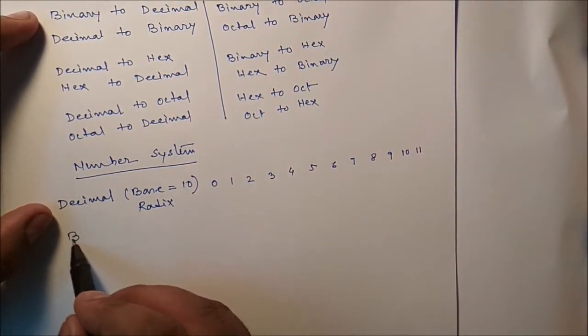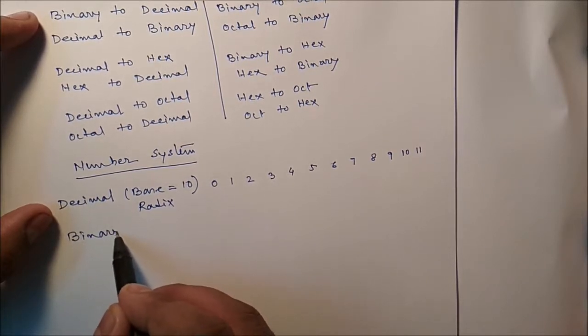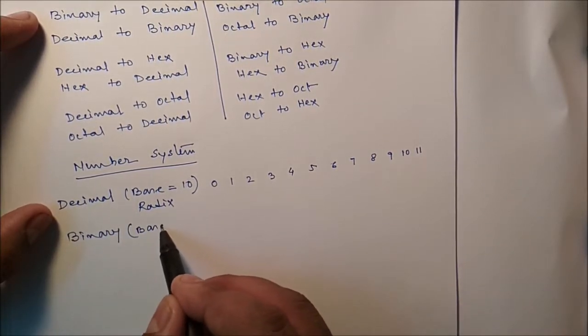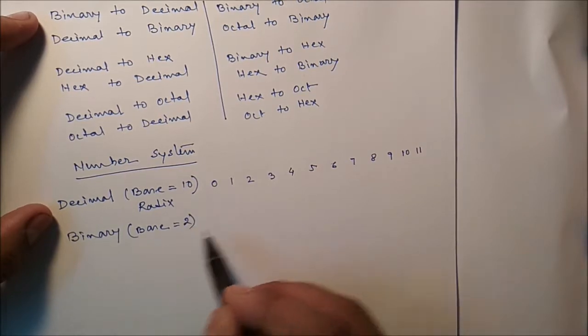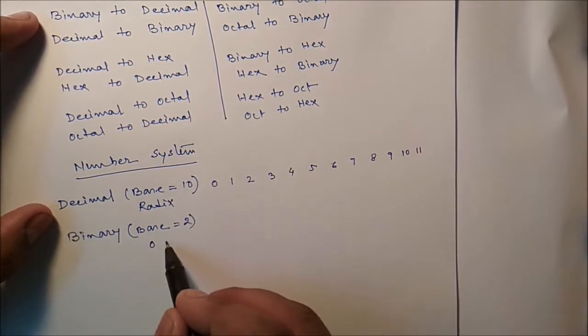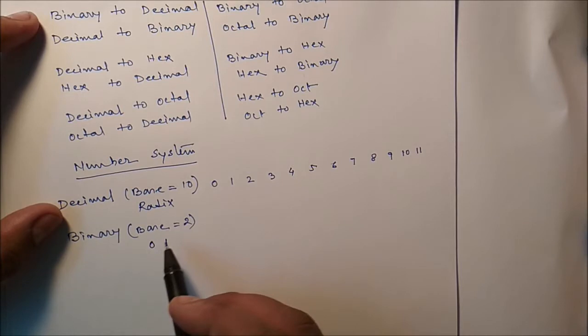Next, we can talk about the binary. So in binary, the base is 2, that means 0 or 1. So basically, computer understands only the binary number 0 to 1.